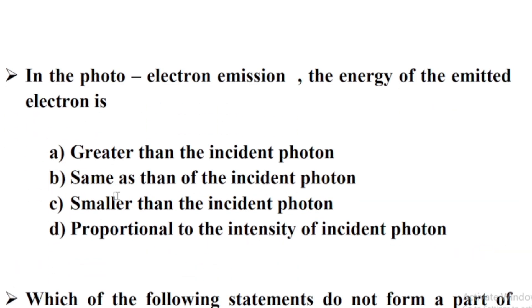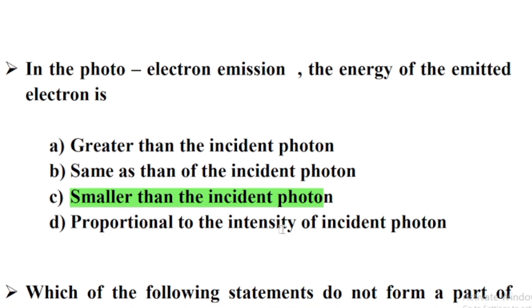In photoelectron emission, the energy of the emitted electron is — Option C: Smaller than the incident photon.